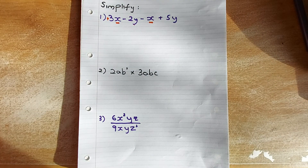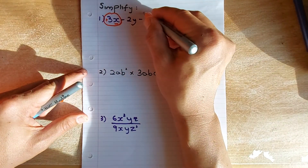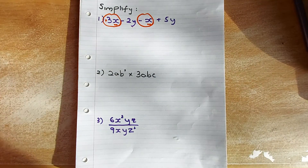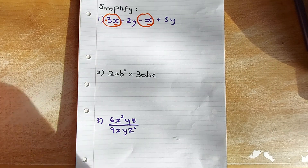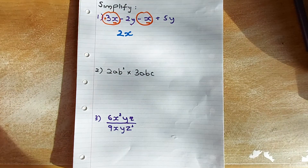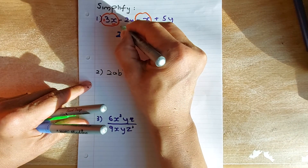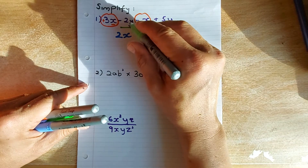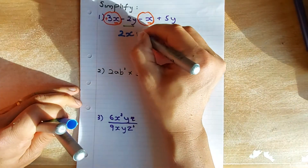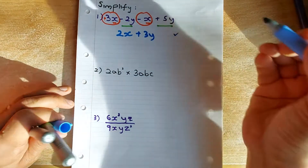Now we're going to add the x family. We have plus 3x and minus x, so 3 minus 1 is going to be 2x. Then we look at the second family: minus 2y plus 5y, so 5y minus 2y gives you 3y, plus 3y. That is a simple pick in the exam.